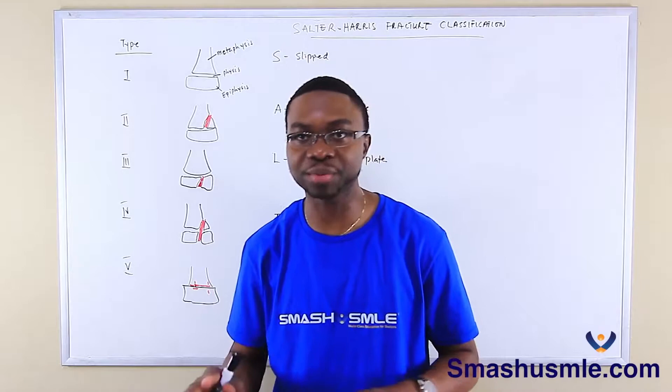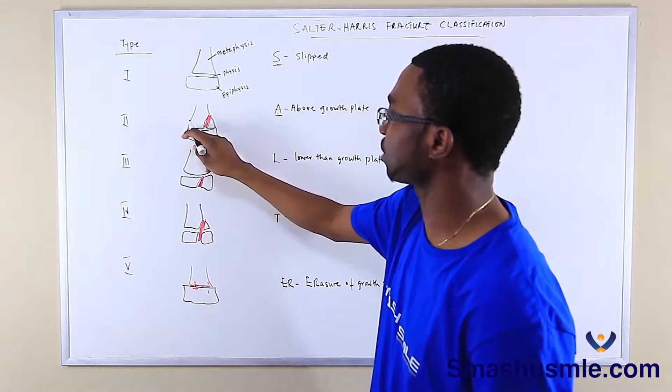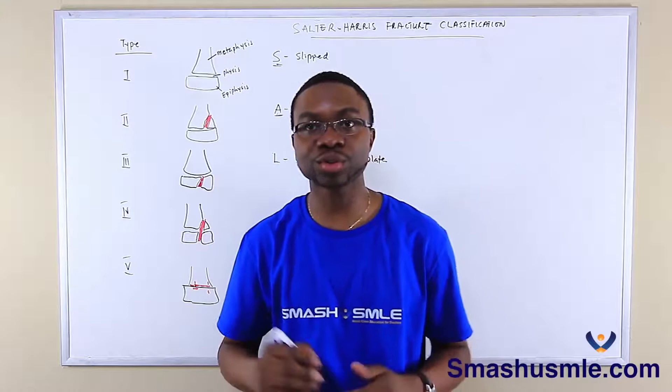Type two, however, is above the growth plate. We're going to spell out SALTER — S is for 'slipped,' A is for 'above' the growth plate. So this is the growth plate, and we get that fracture above the growth plate. That is the type two Salter-Harris fracture.